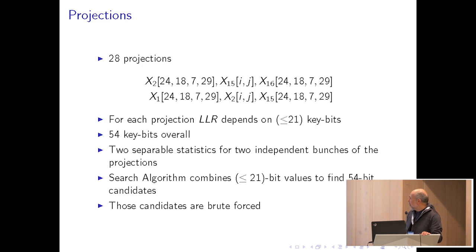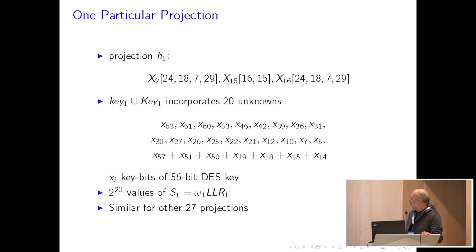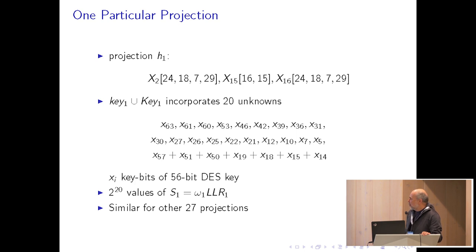For one projection, say projection h1, we take a vector of length 10. The relevant key bits — those affecting the distribution and those affecting the observation of this vector — form a set of 20 unknowns drawn from the DES master key. We can precompute 2^20 values of the statistic s1, and similarly for all other 27 projections.